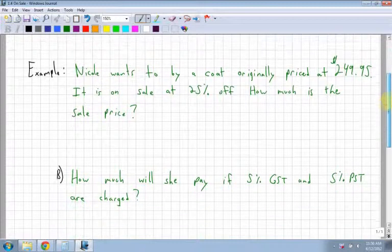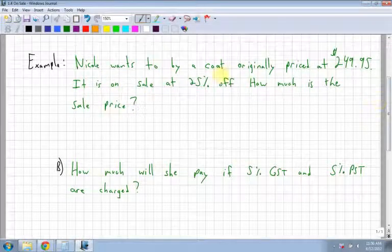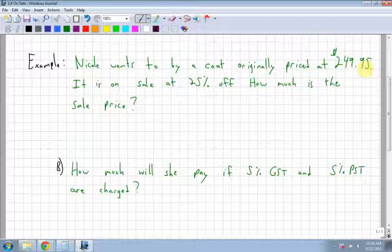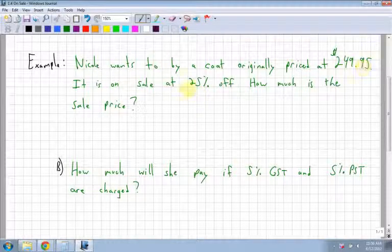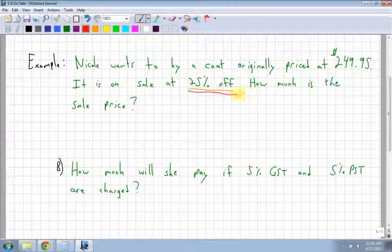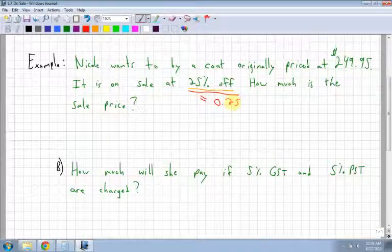For example, Nicole wants to buy a coat originally priced at $249.95. It is on sale at 25% off. How much is the sale price? What has to happen first is you need to convert the 25% to a decimal, always.